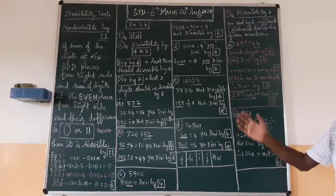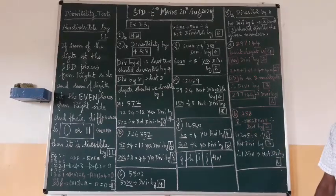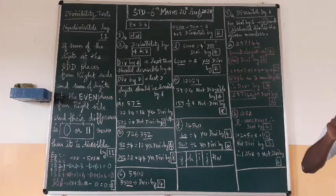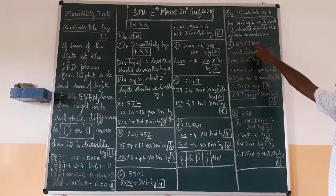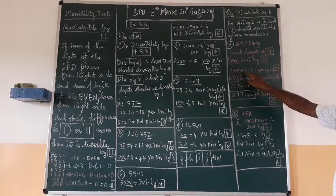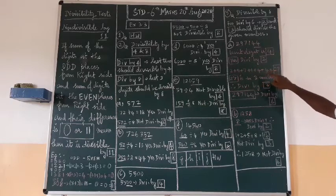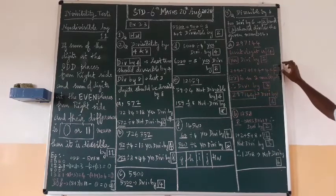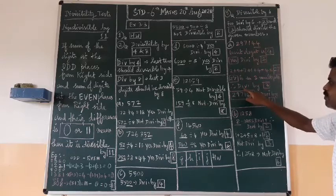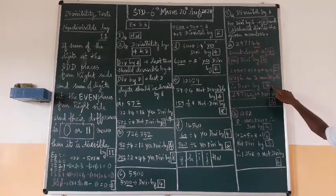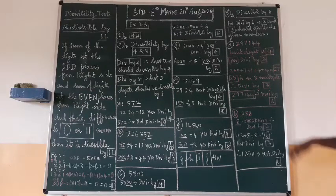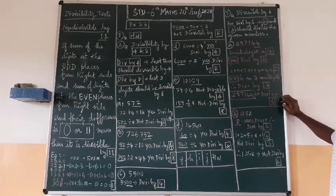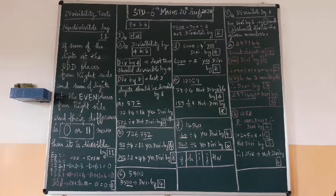Now check 297144 for divisibility by three: add all the digits — 2 + 9 + 7 + 1 + 4 + 4 = 27. Is 27 in the three times table? Yes. So this number is divisible by three. Since 297144 is divisible by both two and three, it is divisible by six.